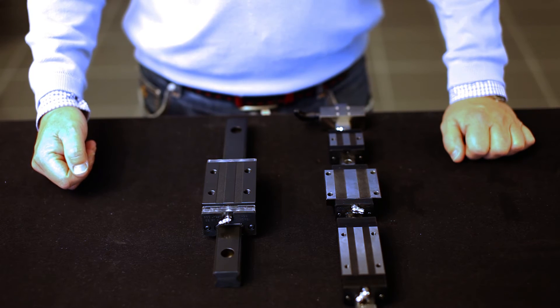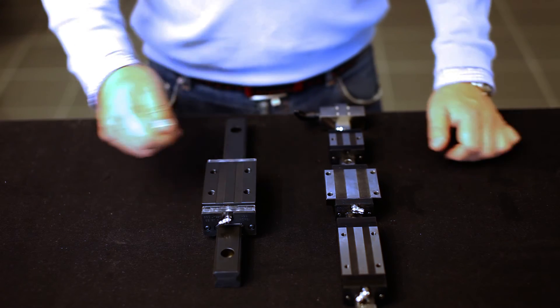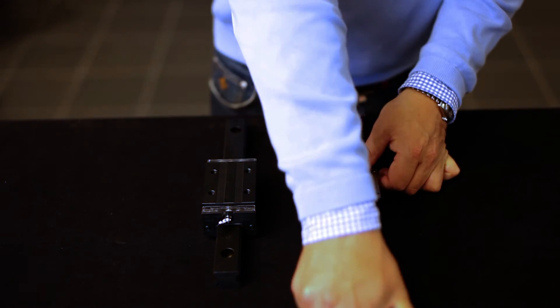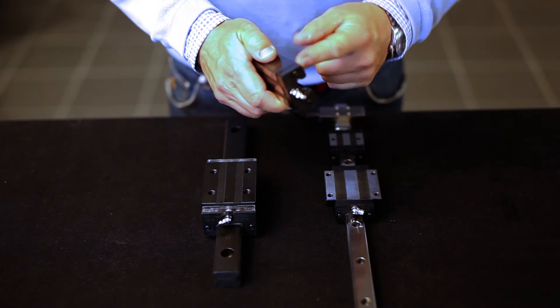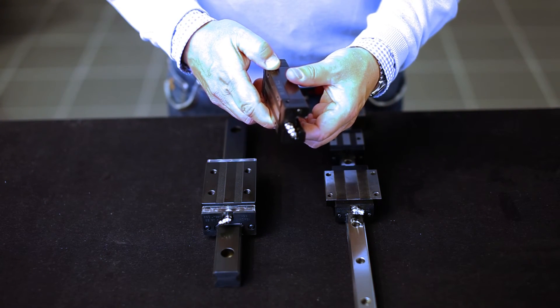The system can be supplied with a lubrication container called MF and you attach it here to the end of the rail guide.